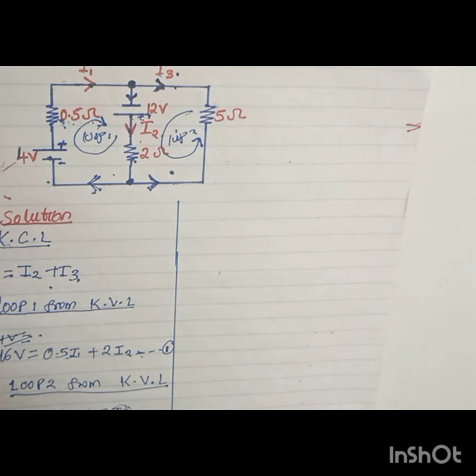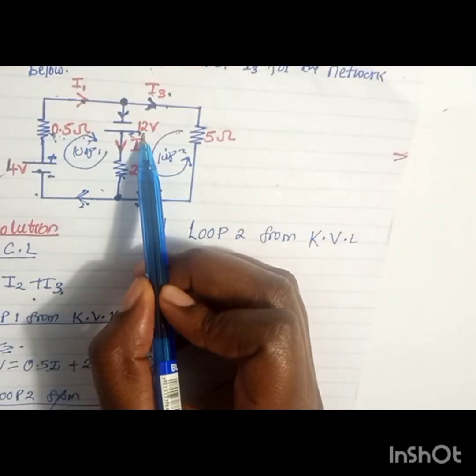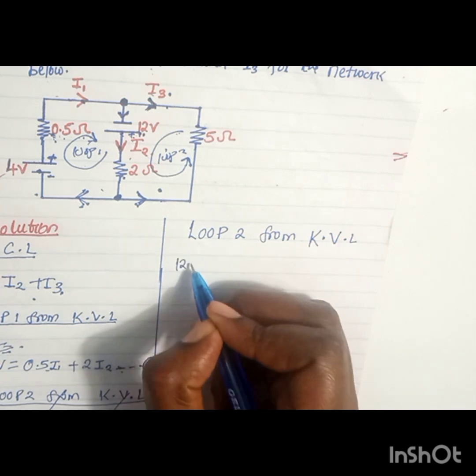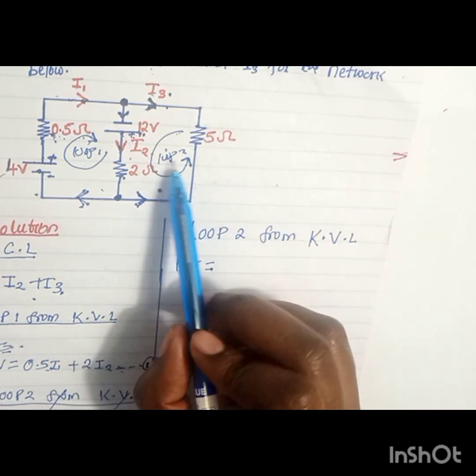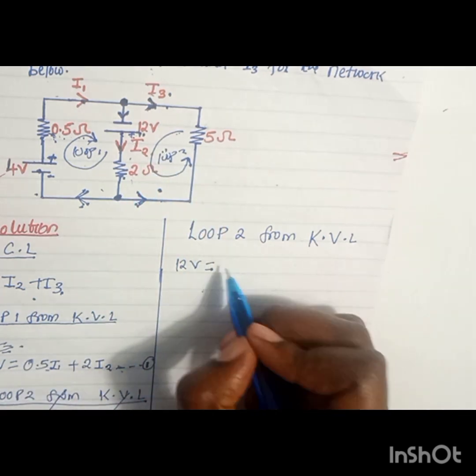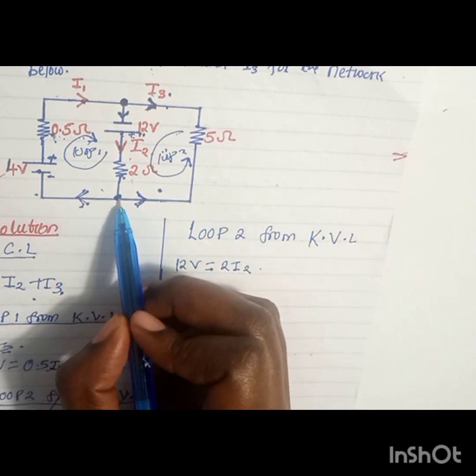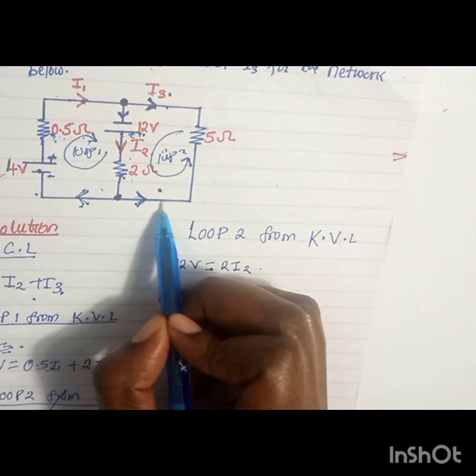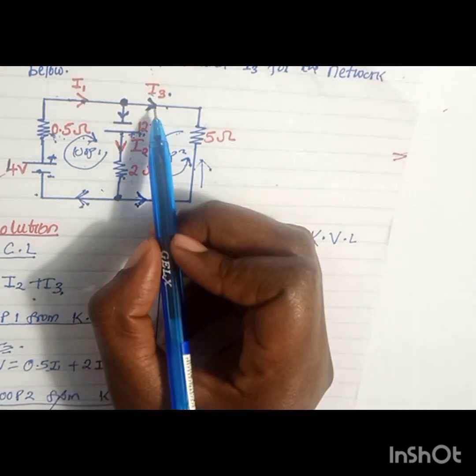Let us look at loop 2. For loop 2, the supply is 12V, so we'll have 12V equals the sum of all the voltage drops in this loop. The drop caused by the 2 ohm resistor is 2I2, but you can see when we reach this junction, this current is flowing in this direction.